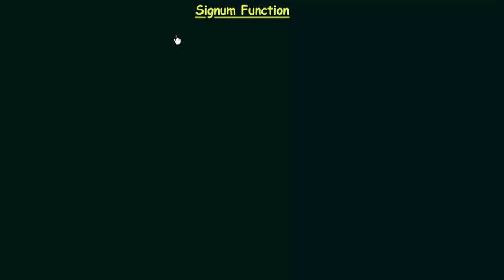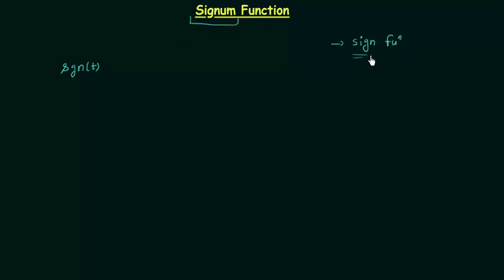In this presentation we will study signum function. Signum function is represented by sgn(t) and is also known as sign function. We got this word signum from sign — signum stands for sign in Latin.